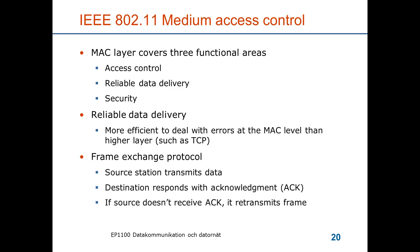The frame exchange protocol is straightforward. The source transmits a frame and the destination responds with an acknowledgement, whether in infrastructure mode with an access point or in ad hoc mode with direct communication. If a source doesn't receive an acknowledgement, it will retransmit the frame according to a regular stop-and-wait ARQ protocol.